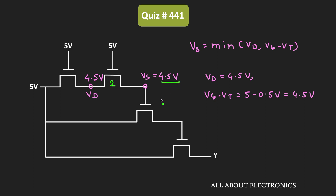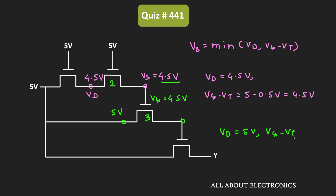That 4.5V output will act as the control input for the third pass transistor, meaning Vg = 4.5V for transistor 3. The input at the drain terminal is 5V. So the output of this third pass transistor will be the minimum of Vd and (Vg − Vt). Here Vd = 5V, while Vg − Vt = 4.5 − 0.5 = 4V. So the output of the third pass transistor will be equal to 4V.